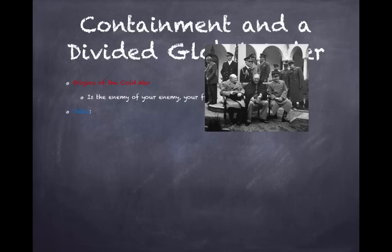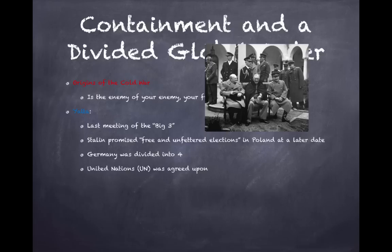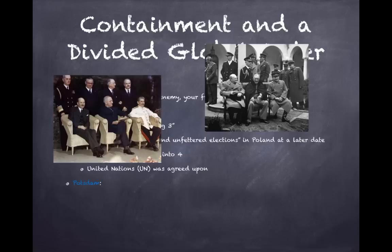Let's talk about important conferences. Yalta was the last meeting of the 'Big Three' — Churchill on the left, FDR in the middle, and Stalin on the right. Stalin promised free and unfettered elections in Poland but never held true to that. Germany was divided into four sections at this conference, and the creation of the United Nations was agreed upon.